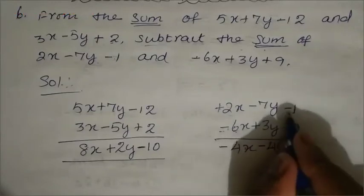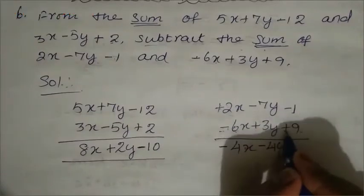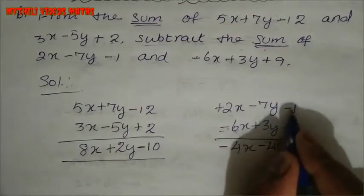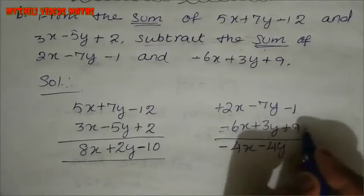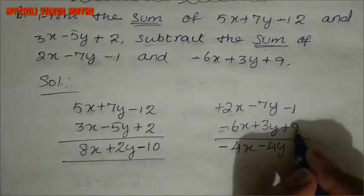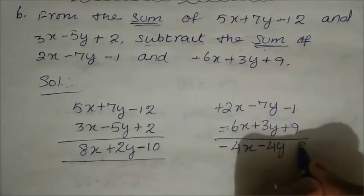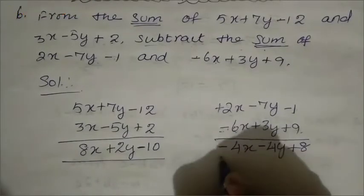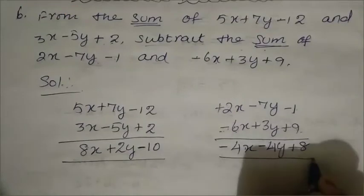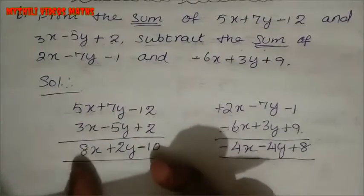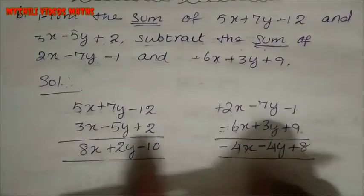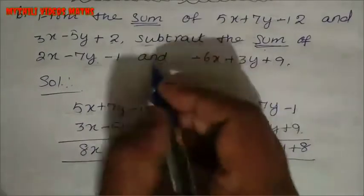For the constant terms: minus 1 and plus 9 — different symbols, so subtract: 9 minus 1 is 8, bigger number is positive, so plus 8. The result of adding the second pair is minus 4x minus 4y plus 8.